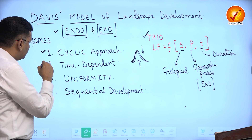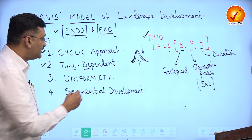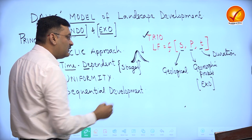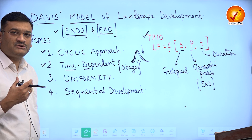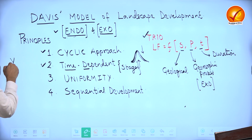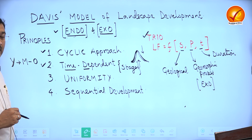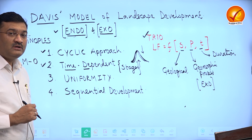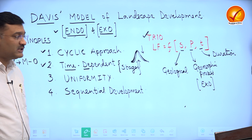The second important principle in Davis is that landform evolution is time-dependent, meaning we can describe the evolution of the landform in certain stages bounded by time. Taking reference from organic life, the landform evolves in three stages: youth, mature, and old. At the end of the old stage the landform is brought down to a base level and converted into a flat surface, referred to as an erosion surface or peneplain.